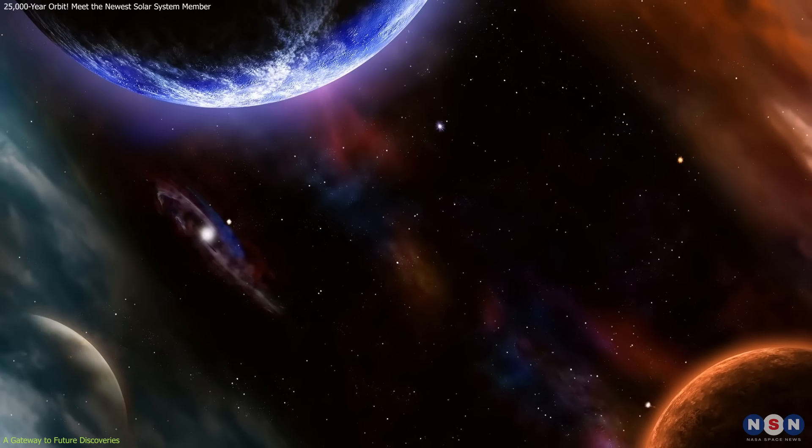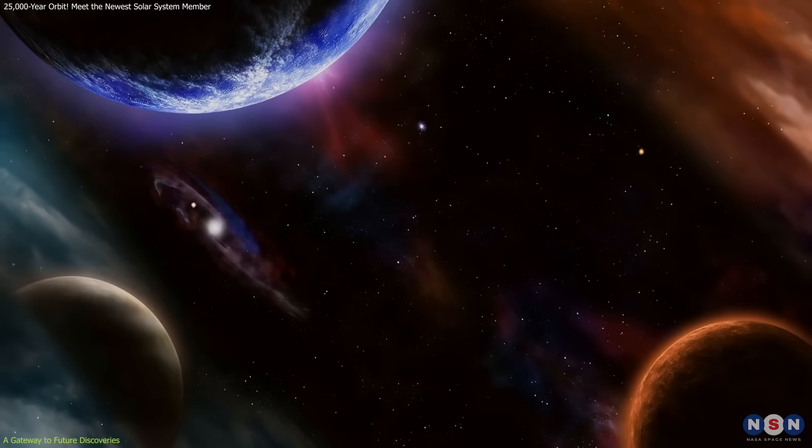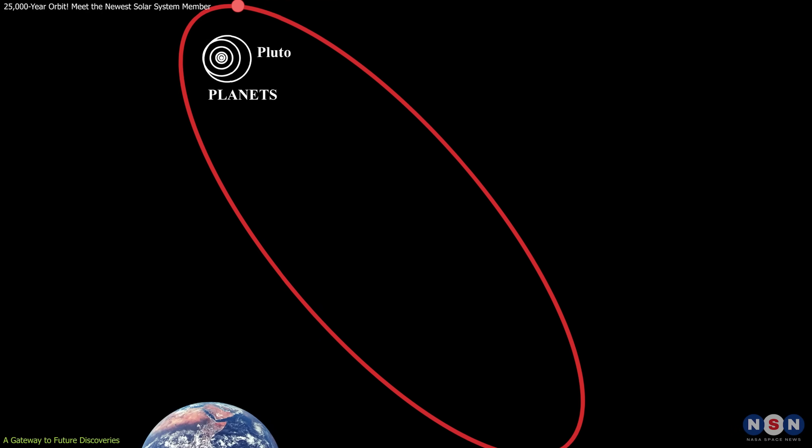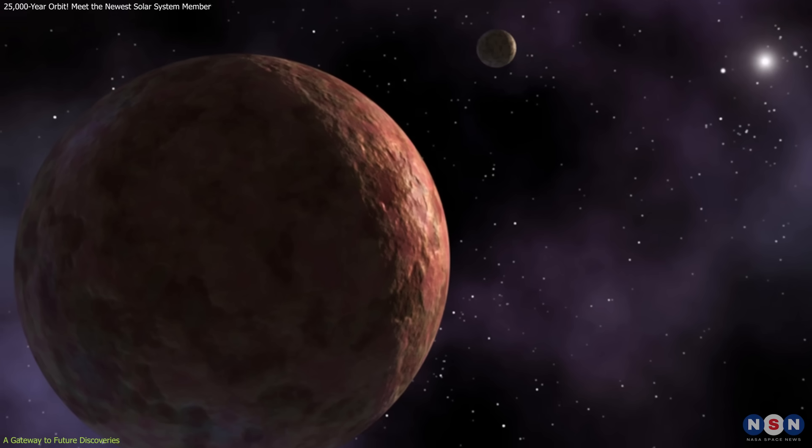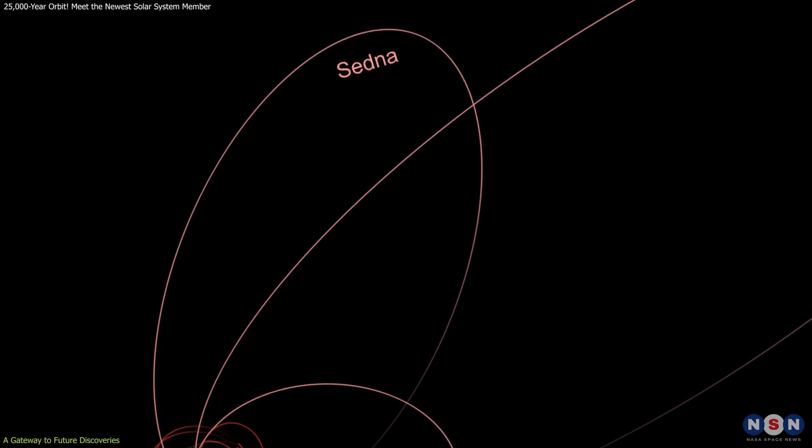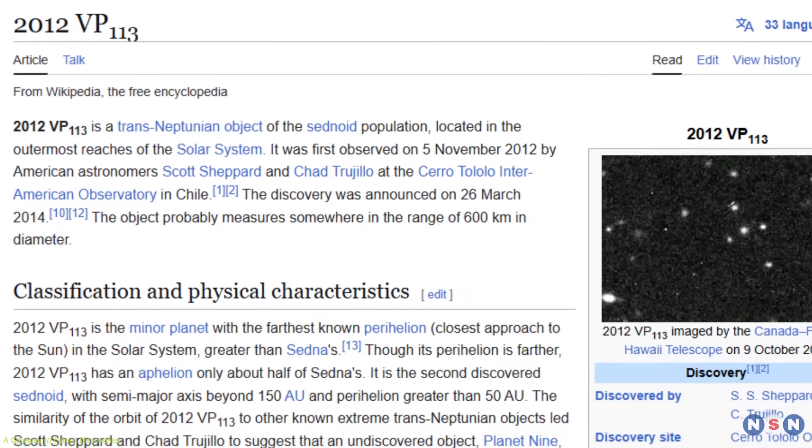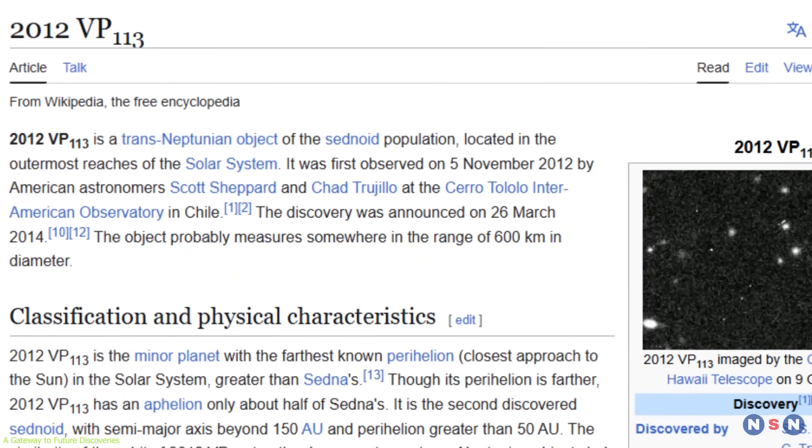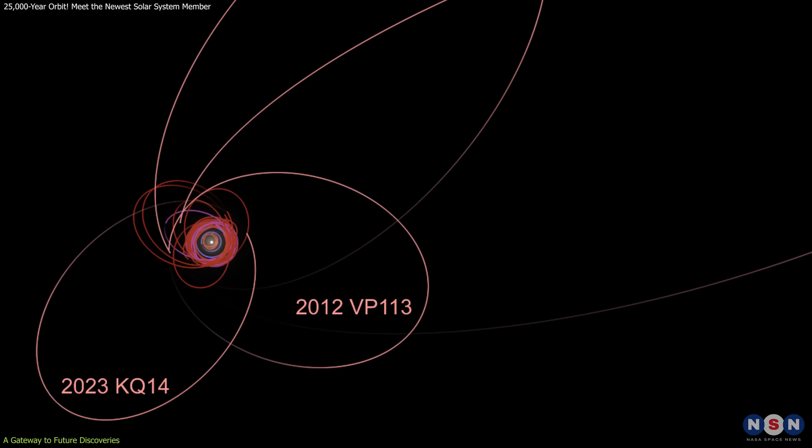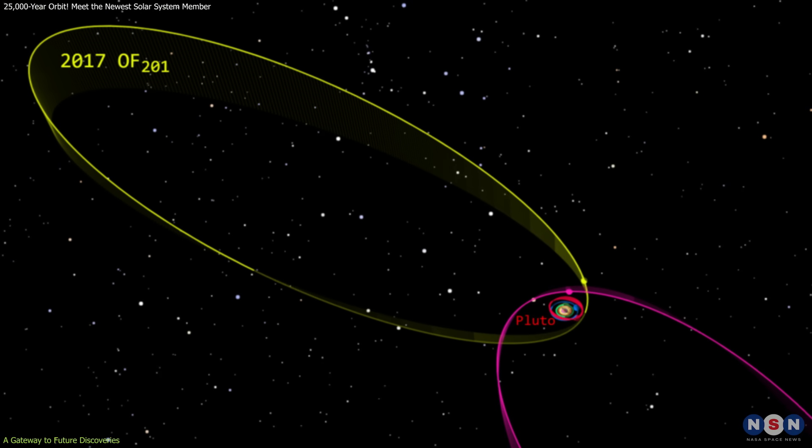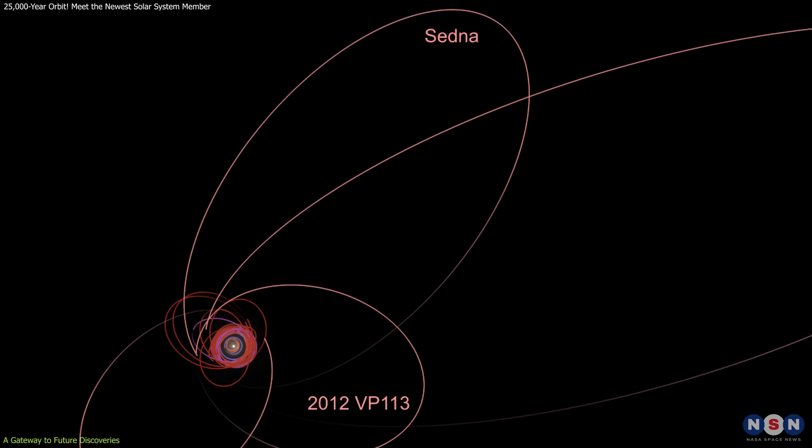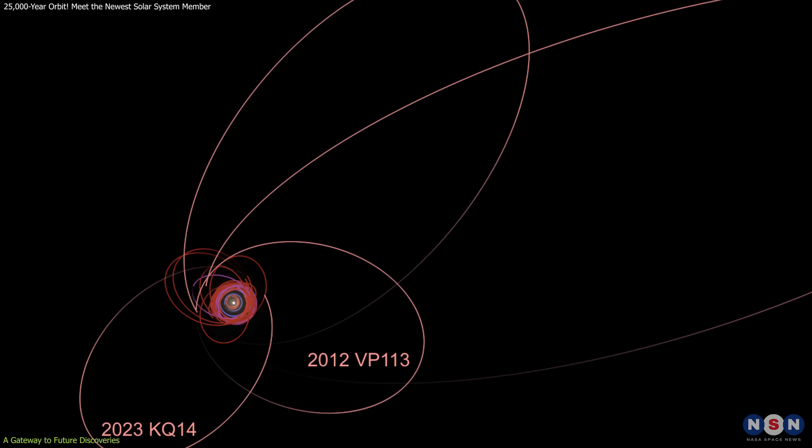Several objects already hint at this hidden population. Sedna, with its aphelion at nearly 1,000 astronomical units, was one of the first trans-Neptunian objects to reveal a distant, detached orbit. Then came 2012 VP113, nicknamed Biden, another object that helped shape the Planet 9 narrative. Like 2017 OF-201, both Sedna and Biden are on highly elongated orbits, suggesting a gravitational past influenced by more than just the eight known planets.